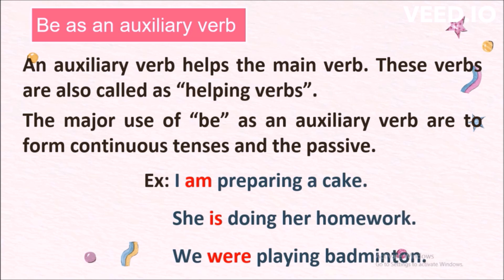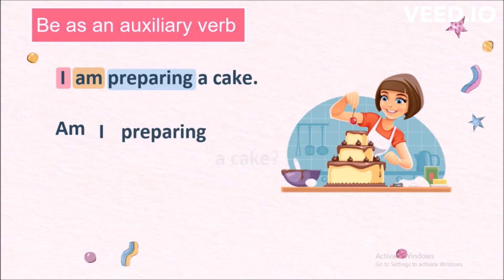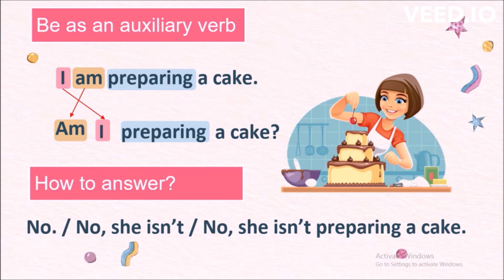Examples: I am preparing a cake. She is doing her homework. We were playing badminton. In 'I am preparing a cake,' I is the subject, am is the helping verb. To form the question, we change the word order of the subject and the helping verb: Am I preparing a cake? First the helping verb, then the subject, then the main verb, and the rest of the sentence. How to answer: no, or no she isn't, or no she isn't preparing a cake.